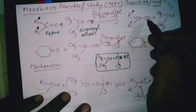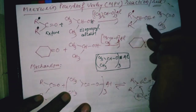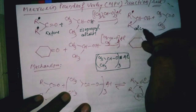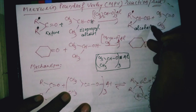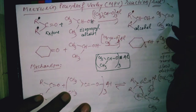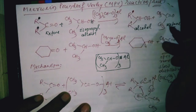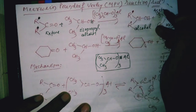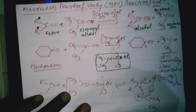Now we add these two compounds in the presence of aluminum isopropoxide. We get R2CHOH — this is an alcohol — and acetone (CH3COCH3). That is acetone, A-C-E-T-O-N-E.